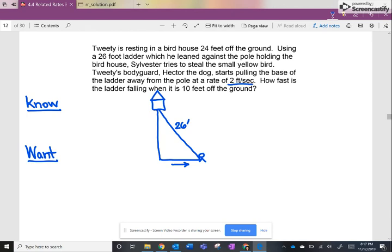So if I label this triangle, let's say I label the base X and the height Y. So we are given, we know, dX/dt is equal to 2 feet per second. How fast is the ladder falling? That's what we want to find out. So that would be dY/dt when, this is something new to us. This is a condition.